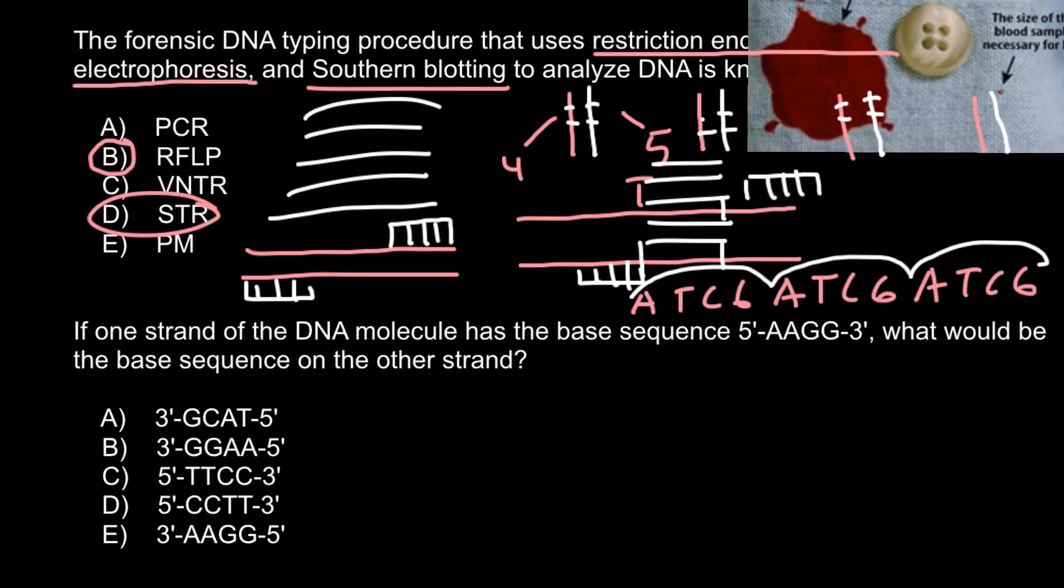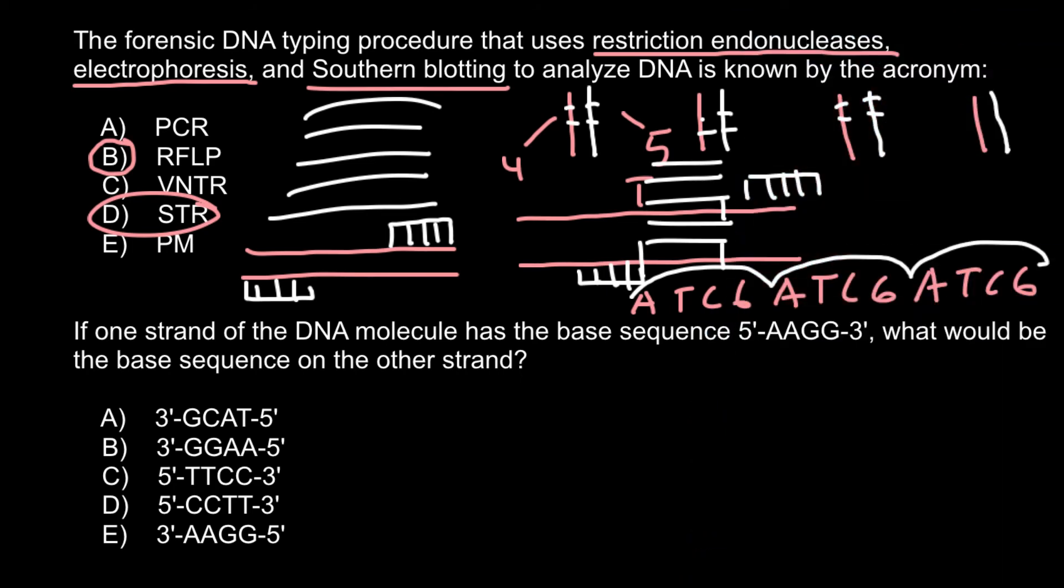Next question. If one strand of the DNA molecule has the base sequence as follows, what would be the base sequence of the other strand? In order to solve this problem, everything you have to know is that adenine base pairs with thymine and guanine with cytosine.